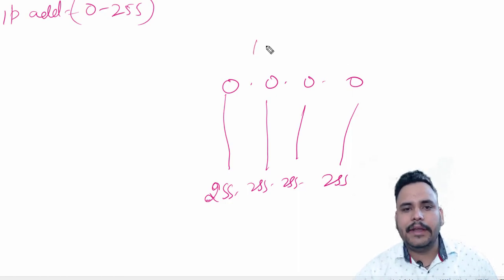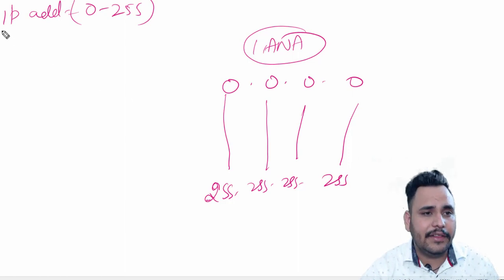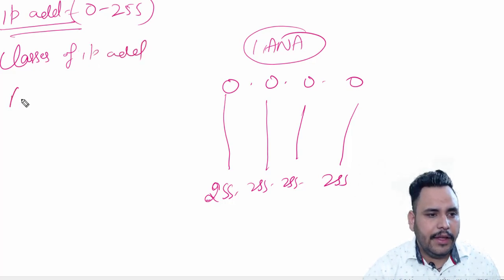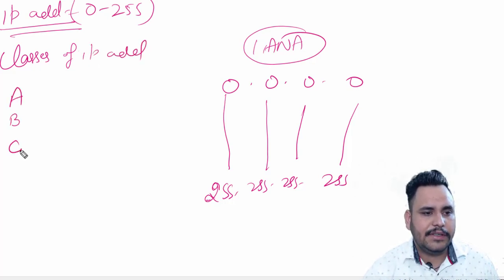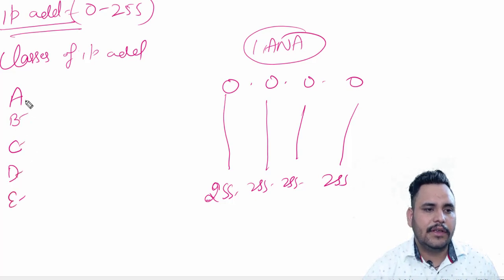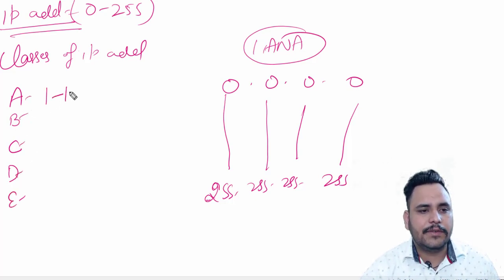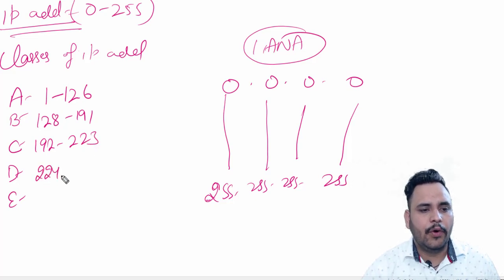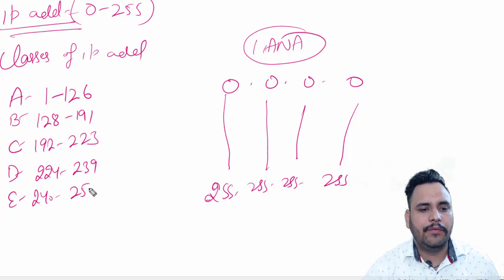IANA — Internet Assigned Number Authority — divided this IP address range into 5 classes: A class, B class, C class, D class, and E class. The range of A class is 1 to 126. B class is 128 to 191. C class is 192 to 223. D class is 224 to 239. And E class is 240 to 254.